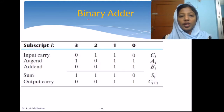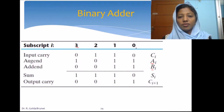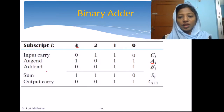In this video lecture, let us start with the binary adder, which can add two binary numbers that are n bits long. For binary addition, we require two inputs. One input is A, the other input is B. Both A and B are four bits long, with four bits from 0 to 3. We call A in general as the augend and B as the addend. Assume that A is 1011 and B is 0011.